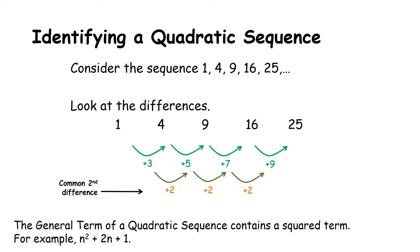The general term of a quadratic sequence contains a squared term, so it looks like AN squared plus BN plus a constant. For example, N squared plus 2N plus 1. There could be a coefficient on the N squared term, a coefficient on the N term, and then there is a constant.